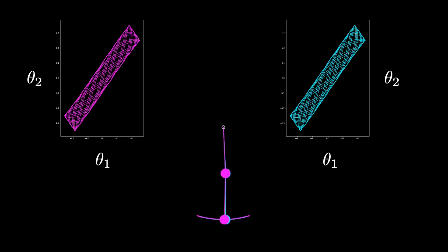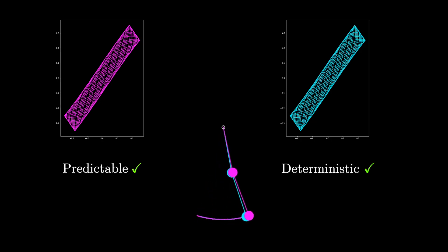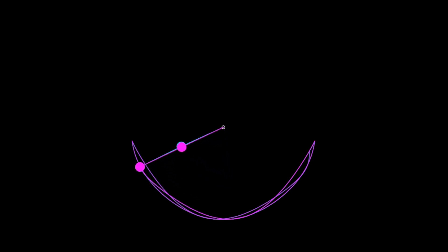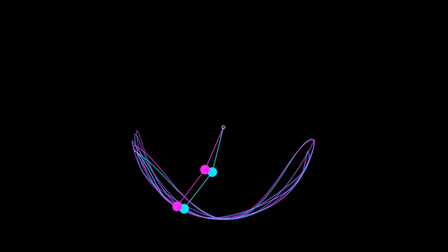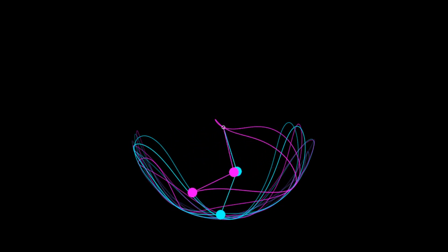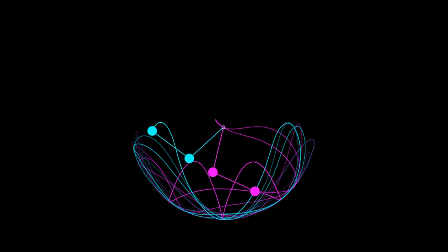This means that when the small angle approximation is valid, the motion is both predictable and deterministic. But let's see what happens if we increase the initial angle. At first the paths are very similar, but eventually the paths of each pendulum diverge substantially from each other. The system has now become extremely non-linear and its motion is chaotic.